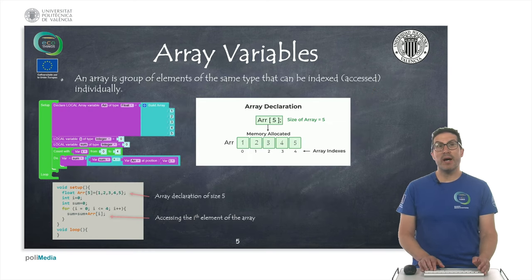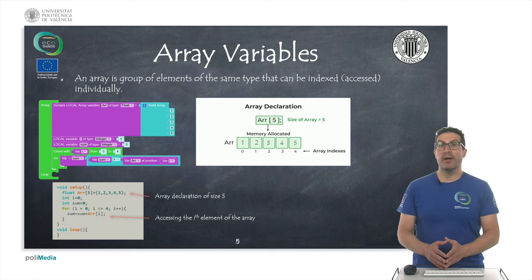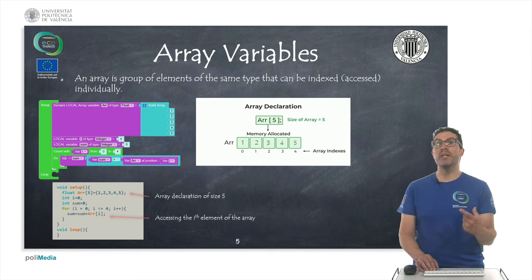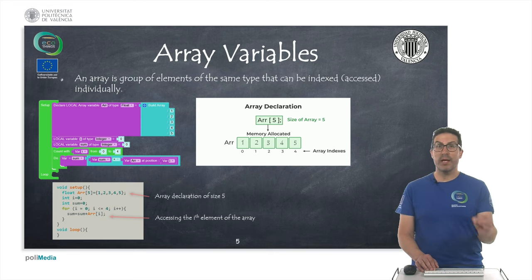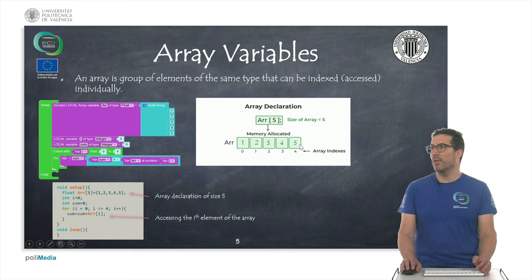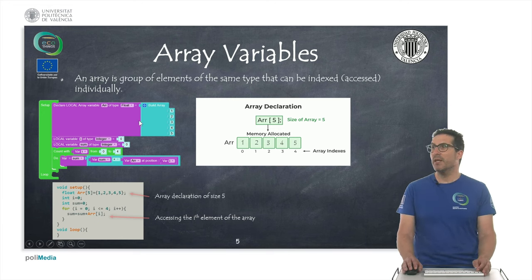An array is a group of elements of the same type that use contiguous memory, and those elements can be accessed through an index. We can think of it as a chunk of memory — this is an array of size 5, and each element can contain any value we want. We can individually access and store those elements.